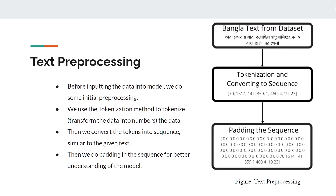To start, we need text pre-processing because the dataset contains sentences that we need to transform into words and remove special punctuations, as they would otherwise cause the model to perform poorly.